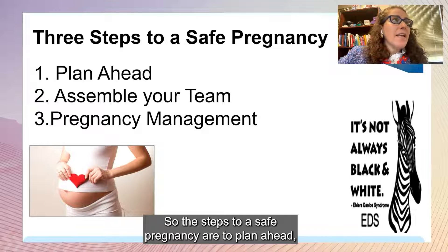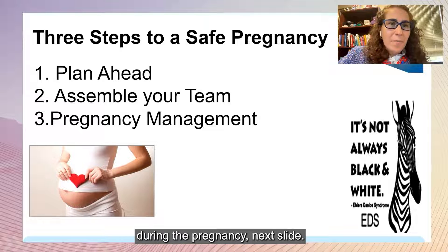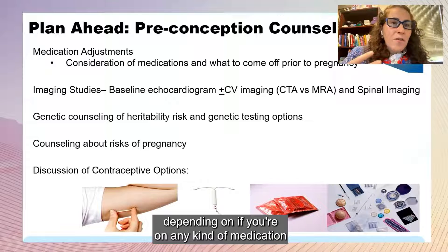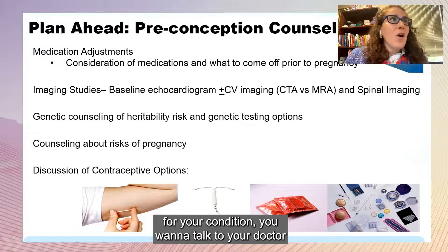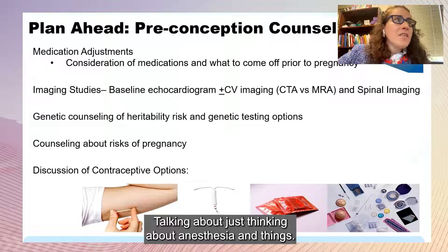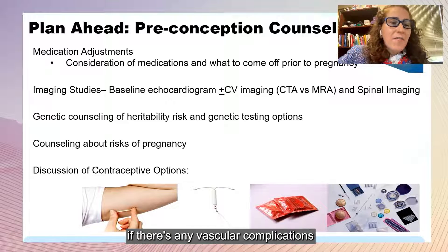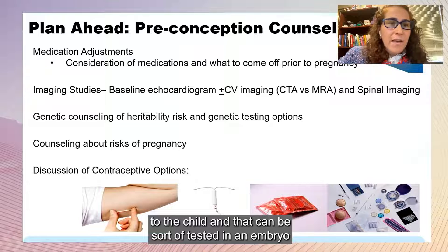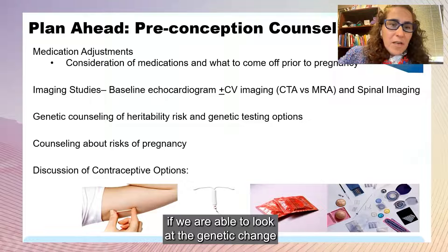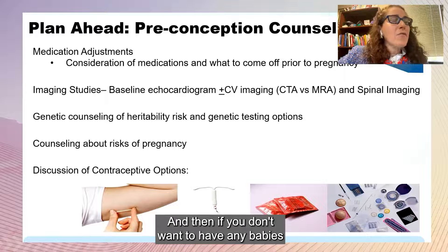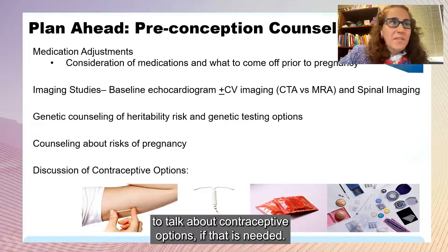The steps to a safe pregnancy are to plan ahead, assemble your team, and get good management during the pregnancy. Prior to getting pregnant, if you're on any medications for your condition, talk to your doctor to make sure those are safe in pregnancy. Consider imaging prior to pregnancy if there are any vascular complications, to look at the vascular system. Talk about the inheritance risk to the child — this can potentially be tested in an embryo if you're doing in vitro fertilization, or the genetic change can be assessed during or after pregnancy. Discuss the risks of pregnancy we've covered, and if you don't want to have babies, talk about contraceptive options if needed.